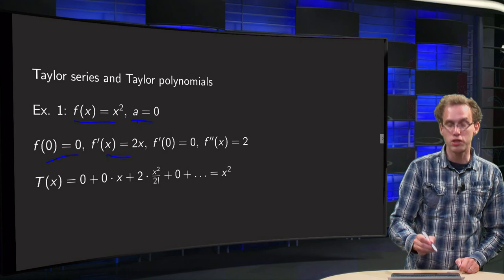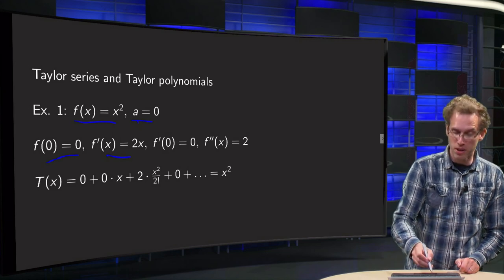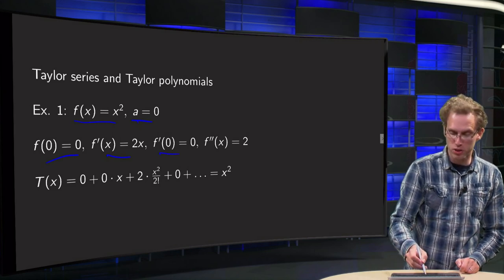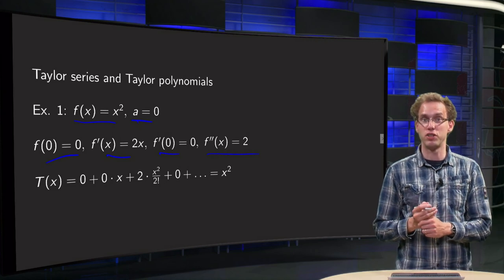f'(x) = 2x, so plugging in x = 0 yields 0 again. f''(x) = 2 for all x, and all higher derivatives are 0.